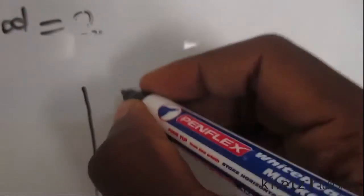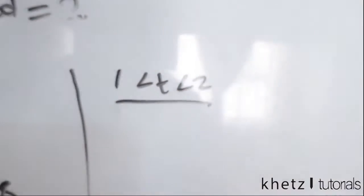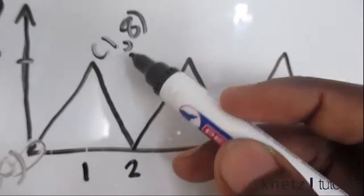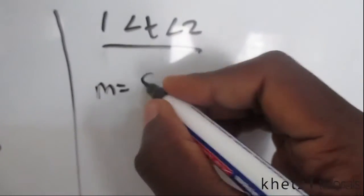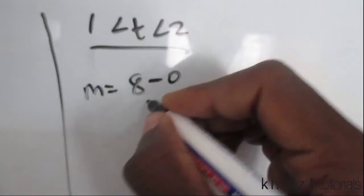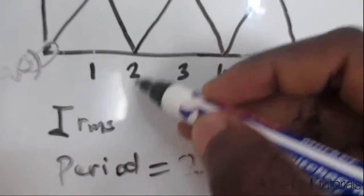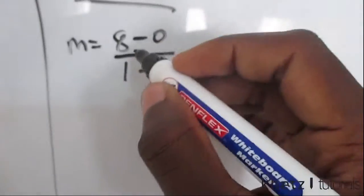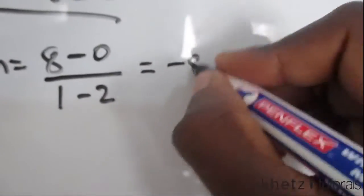Moving on to the second section, which is from time 1 to time 2. We're going to do the same thing. Over here we have 2, 0 and at that point we have 1, 8. Let's take the top part again to find our gradient and say 8 subtracted 0 divided by 1 subtract 2. We're going to have 8 at the top and minus 1 at the bottom, which is going to give us a gradient of negative 8.